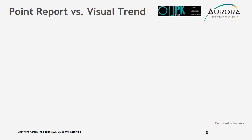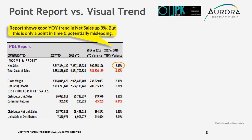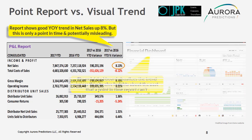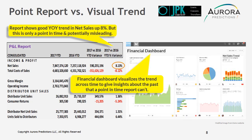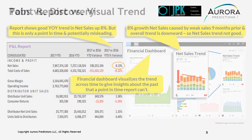Point report versus visual trend. In this P&L report, it shows a good year-over-year trend in net sales, which is up over 8%. But this is only a point in time and potentially misleading. A financial dashboard gives the trend across time to provide insights about the past that a point-in-time report can't. The 8% growth in net sales is actually caused by weak sales nine months earlier, and the overall trend of sales is downward. So net sales trend is not as good as the report showed us.